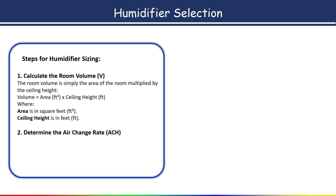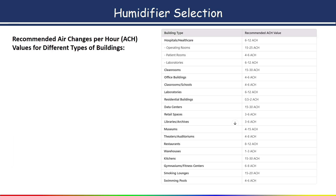The second step is to determine the air changes rate (ACH). ACH means how many times we have to change the air in one hour to make a comfortable environment. Based on the room type, we select the appropriate ACH value from the table. In this table the recommended air changes per hour values are given for different building types — the first column shows building type and the second column shows recommended ACH value.